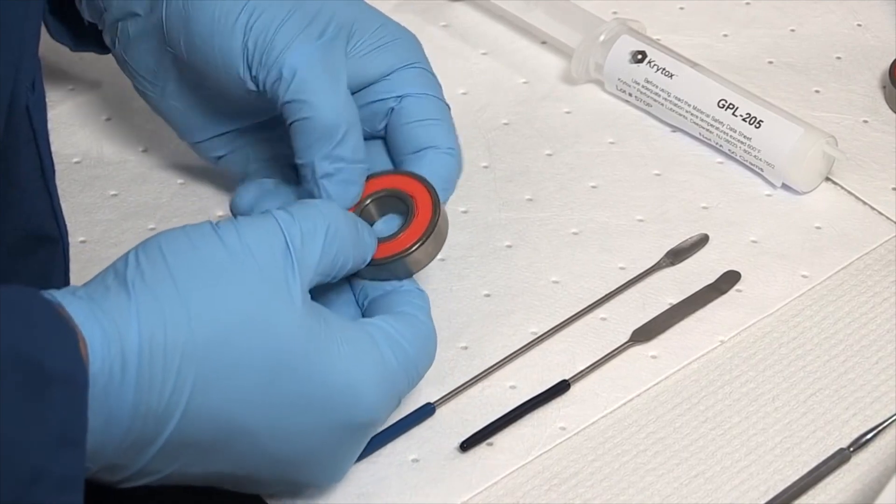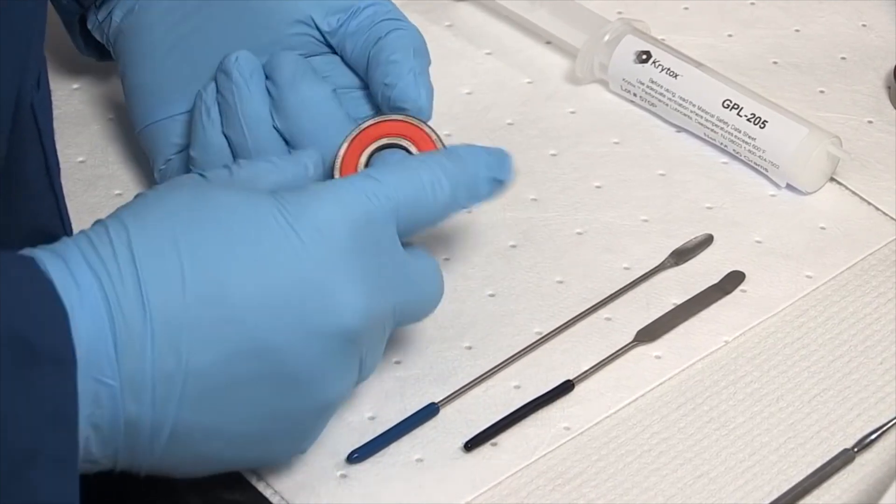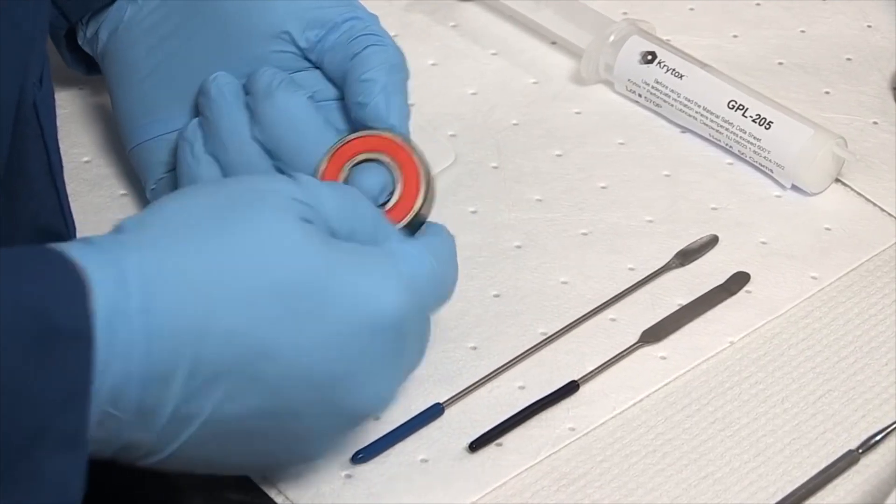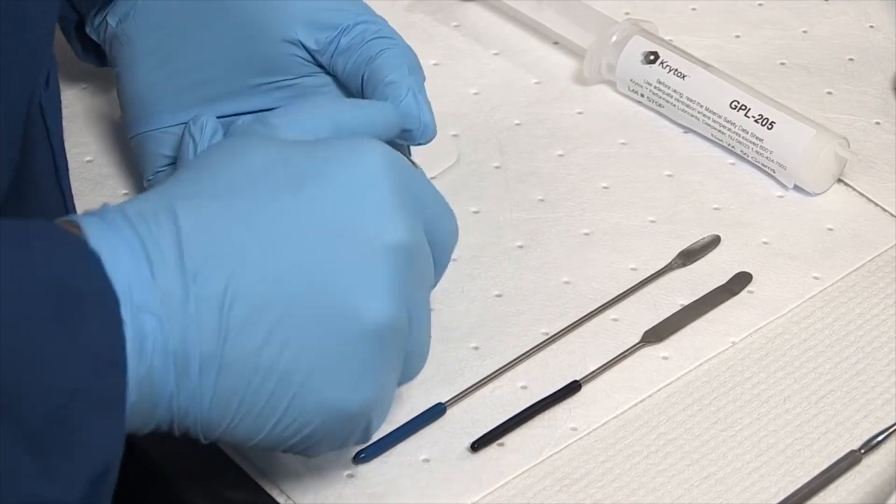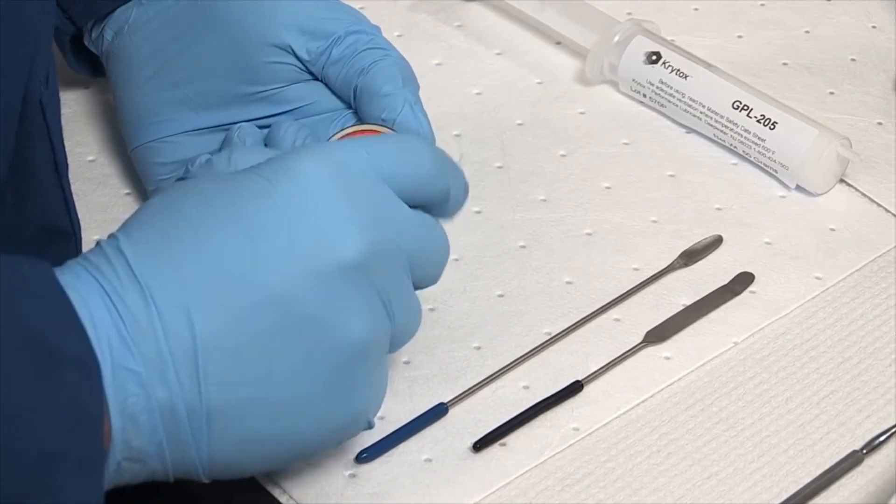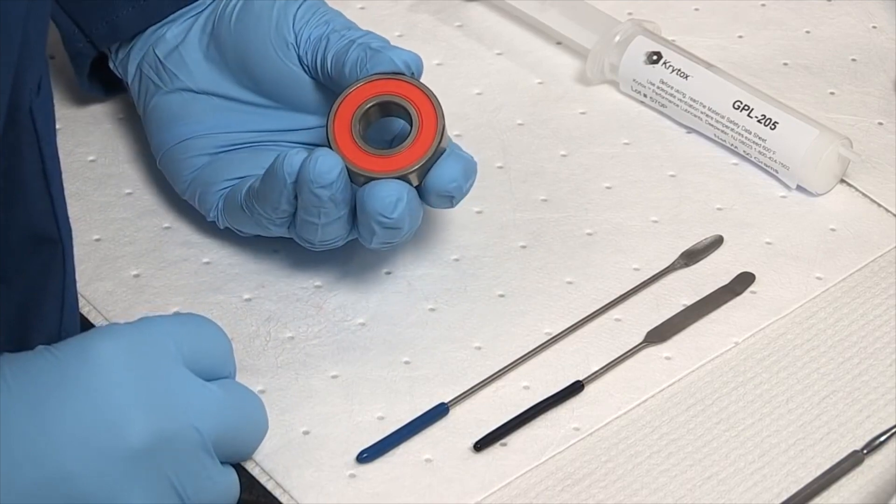Proper lubrication is achieved by using the correct amount of grease. Too little grease will cause premature failure. Too much grease in the initial fill or during re-lubrication can cause overheating of the bearing running at medium to high speed.